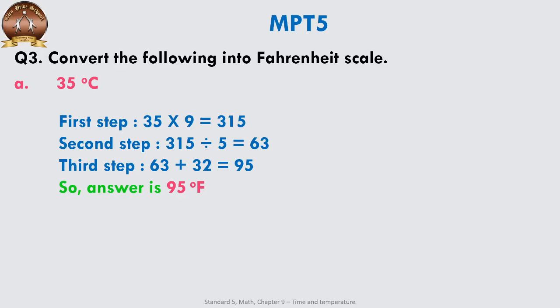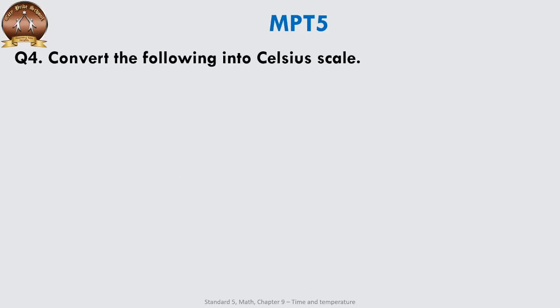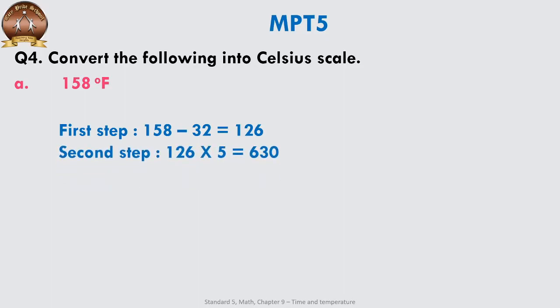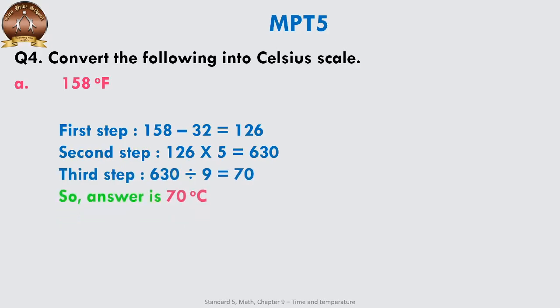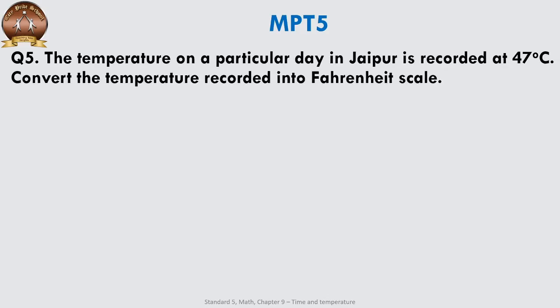Convert 158°F into the Celsius scale. Step 1: subtract 32 — you get 126. Step 2: multiply by 5 — you get 630. Step 3: divide by 9 — you get 70. So the answer is 70°C.